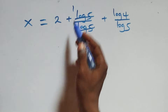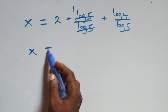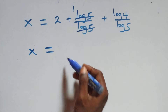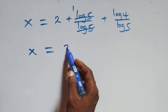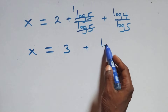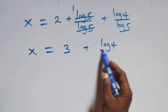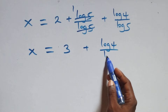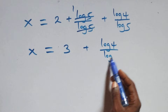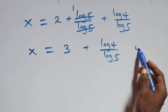Log 5 cancels each other — we have one left. This becomes x equals to 2 plus 1, that's 3, and plus log 4 over log 5.